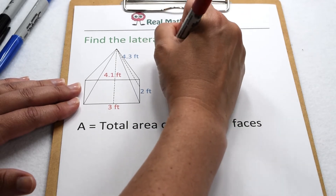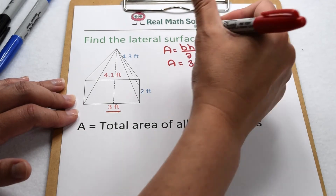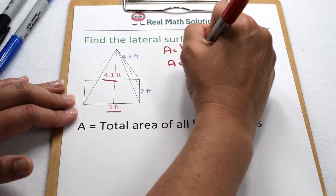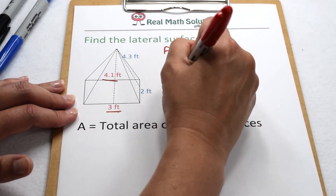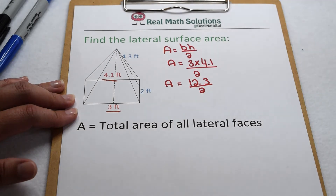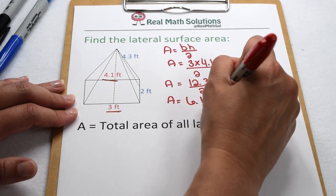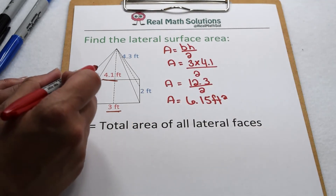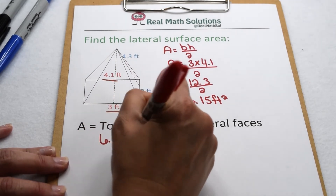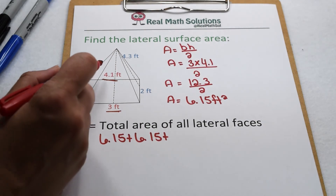Let's start by finding the area of the triangles along the length. Area of a triangle is base times height divided by two. In this case our length is 3 feet, multiplied by our slant height of 4.1 feet. 3 times 4.1 gives me 12.3, and then we divide that by two. 12.3 divided by two gives me an area of 6.15 square feet for both lateral faces along the 3-foot edge, so we count that value twice — once for the front face and once for the back face.